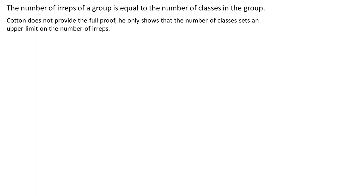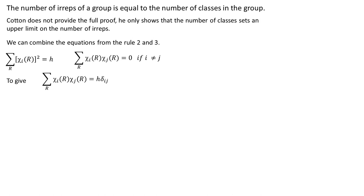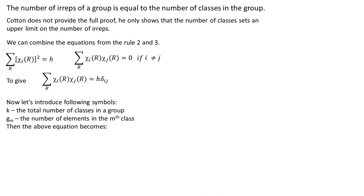First we combine the equation 2 and 3. Again delta tells us that if we take a dot of two vectors that are made of characters of two different irreps the result will be zero. Now let's introduce some symbols. Let k be the total number of classes in a group and gm the number of elements in the mth class. And we got this.